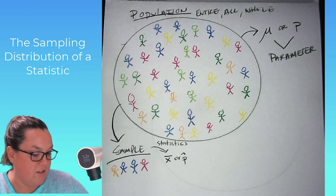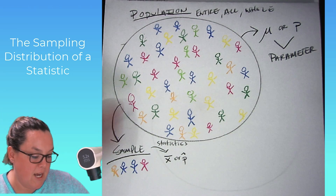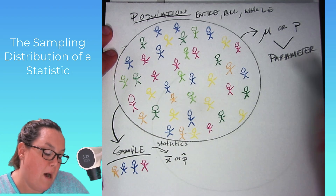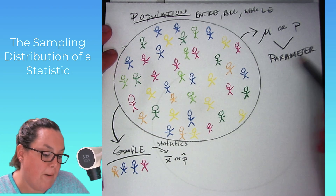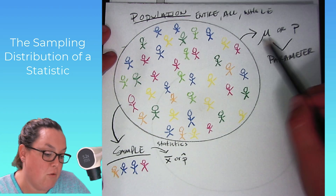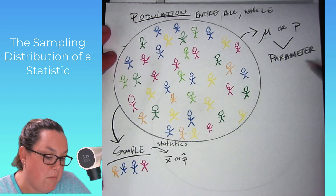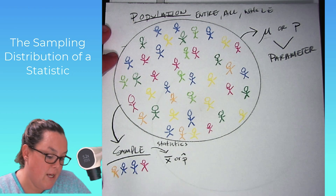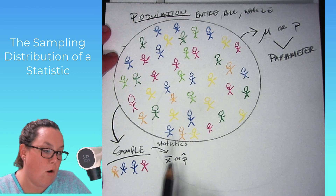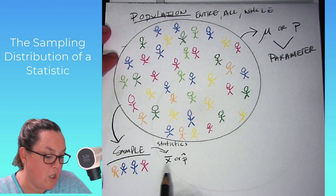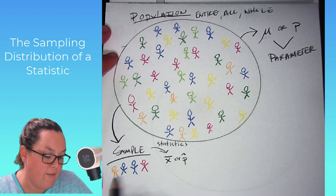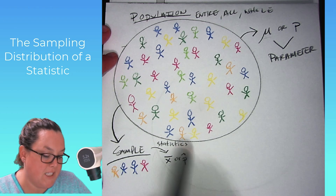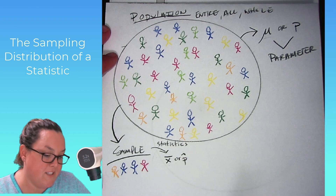If I were to find the average height for the sample group, or the proportion of people with brown eyes in that sample, I would have x-bar for average height and p-hat. These are statistics because they are referring to the sample. So we have a population, a sampling method to get a sample, parameters referring to the population, and statistics referring to the sample.